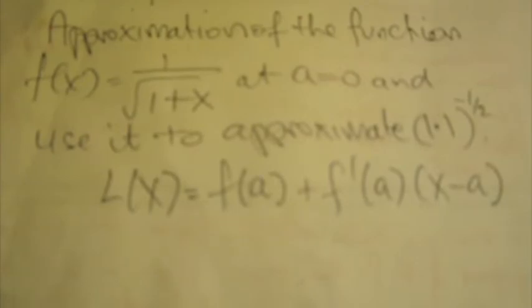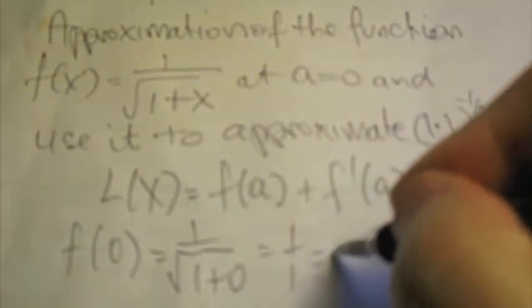And we need to look at our function. So our function f(0) is going to be 1 over the square root of 1 plus 0. So this will be 1 over 1, which is 1.